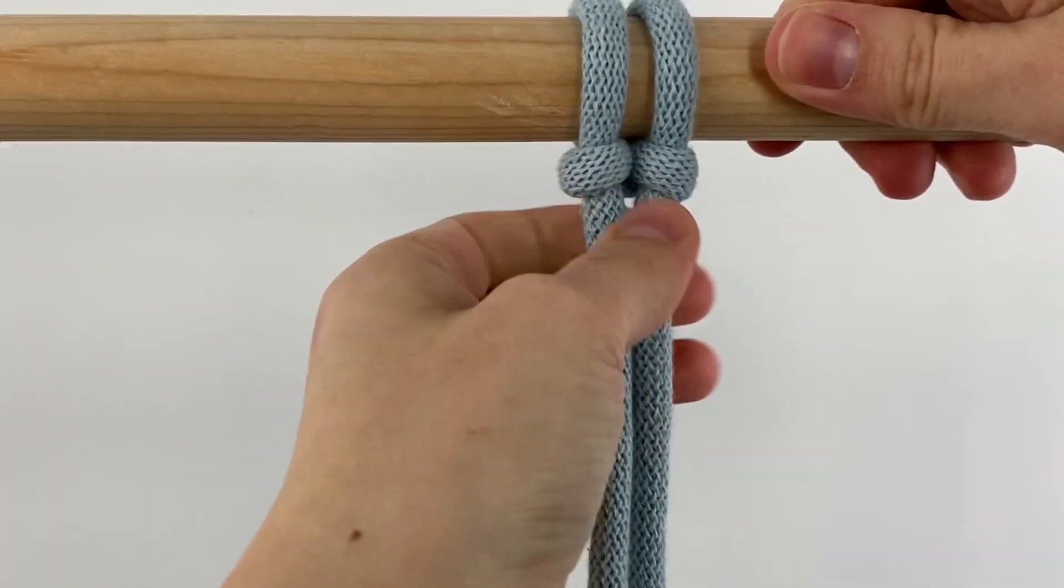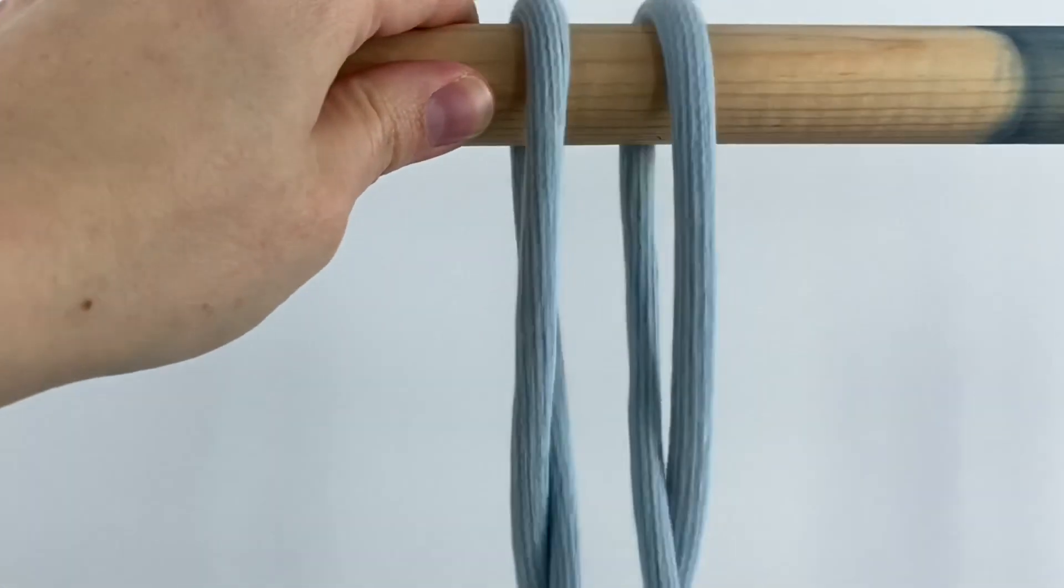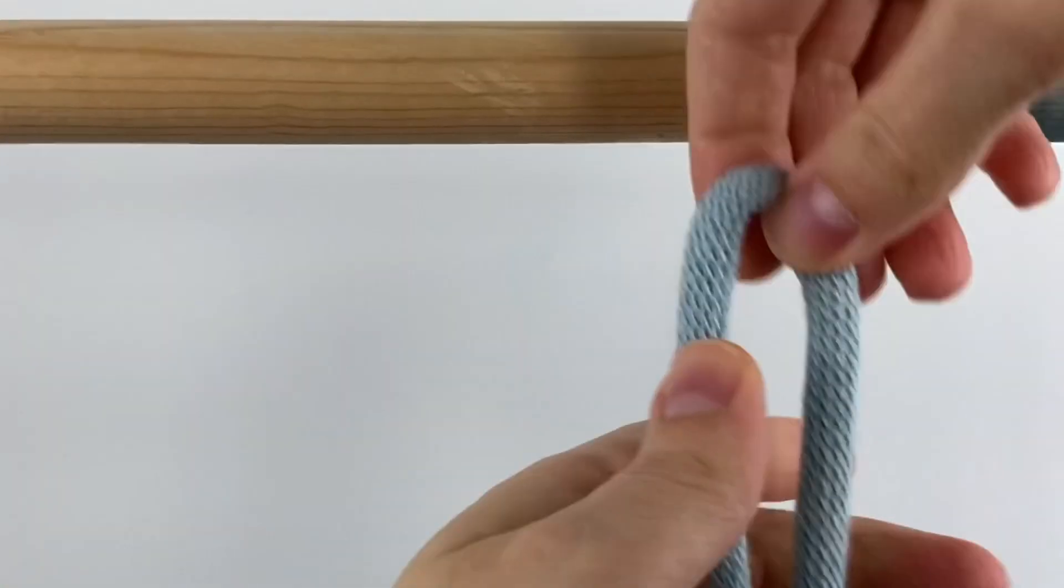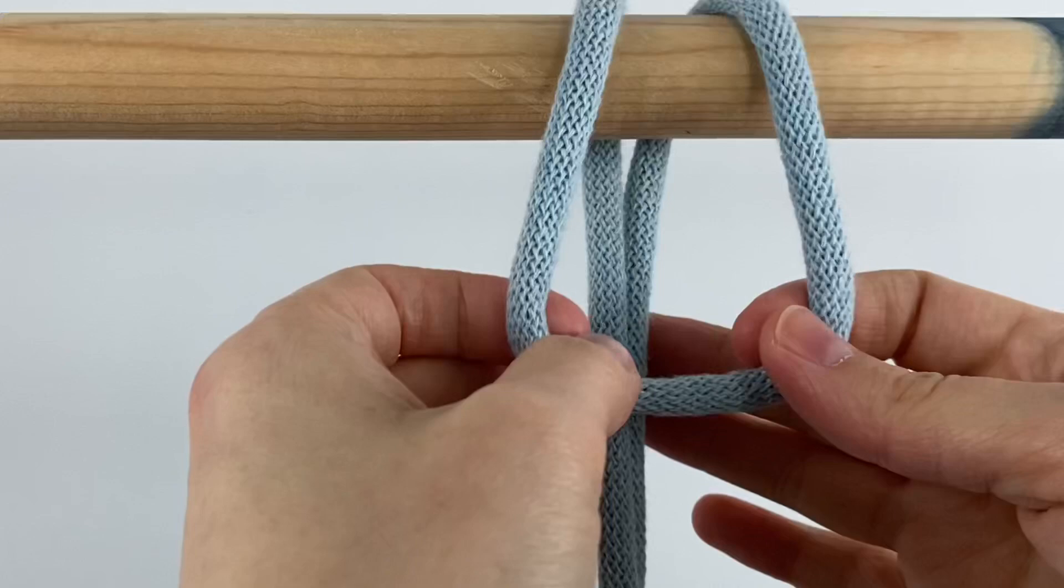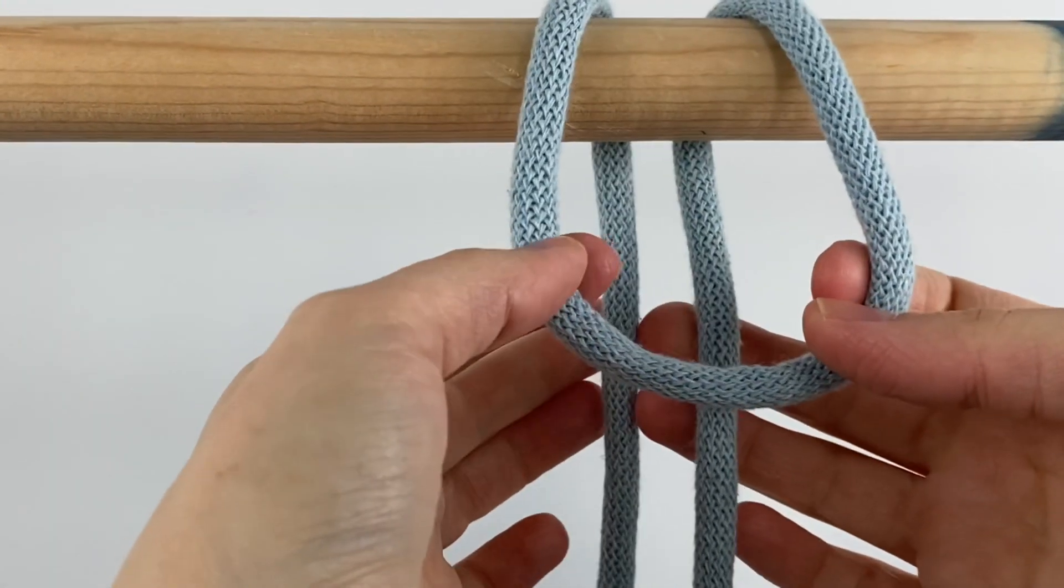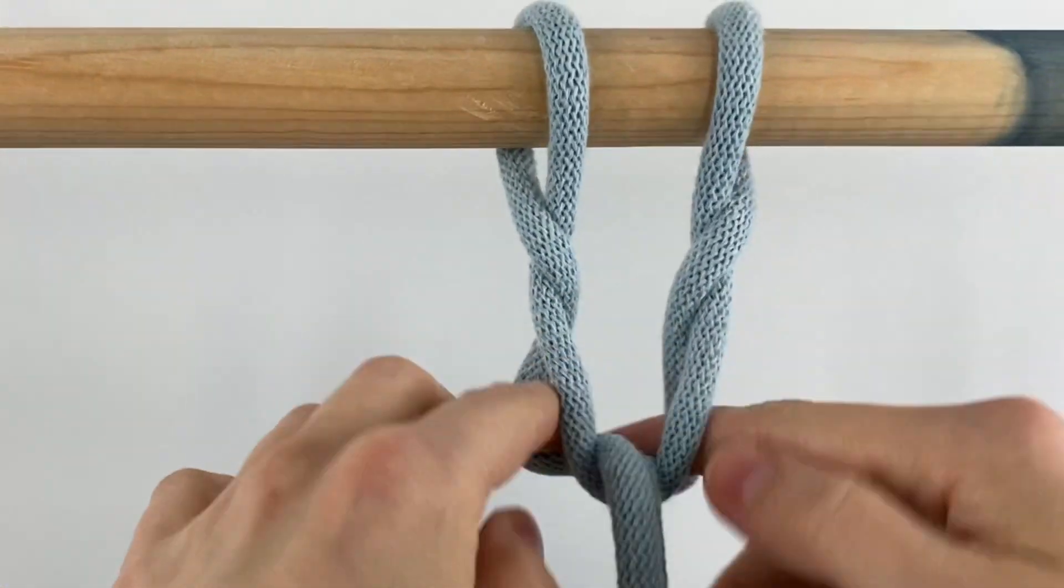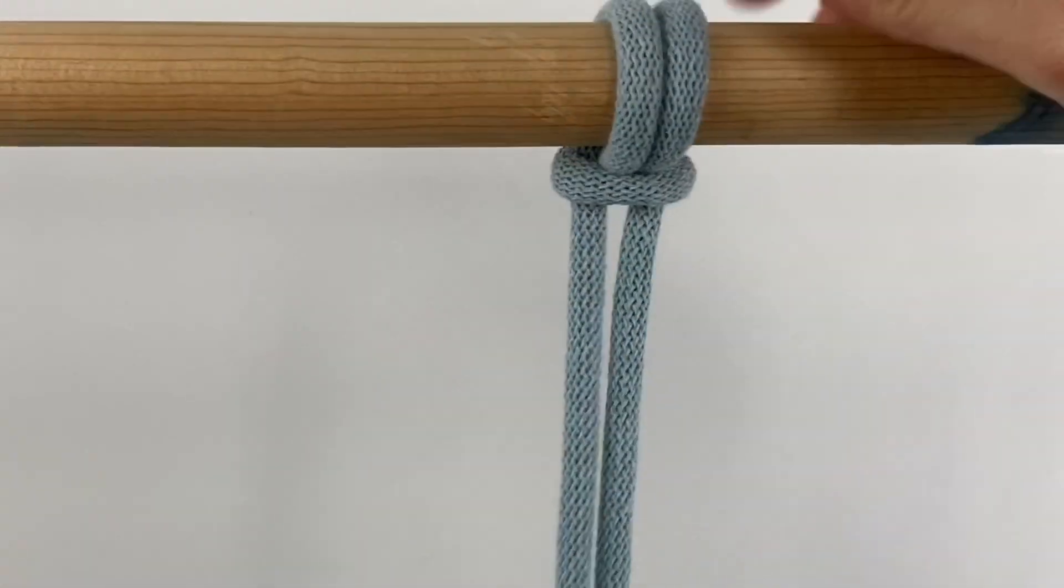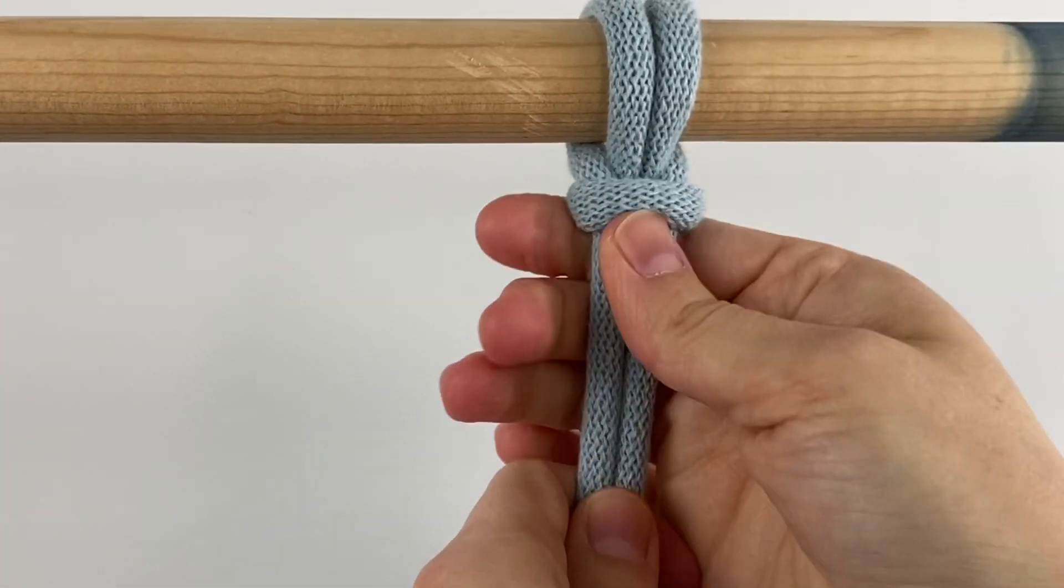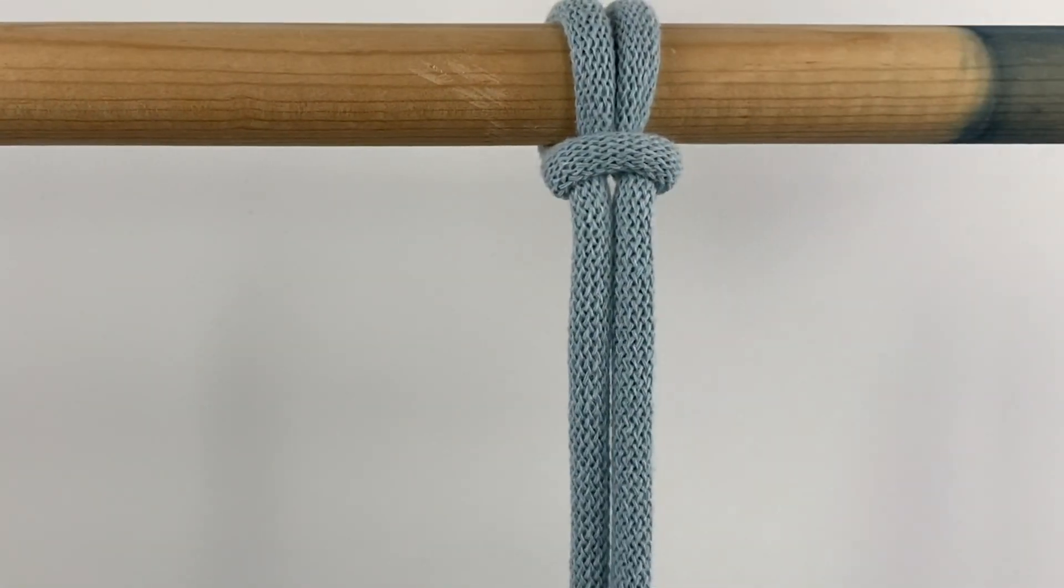And there you go, and this is also a really secure knot. Now I'll show you if you do it the other way, it looks almost like a larks head knot from the front. So you loop it over like you normally would, but instead of pulling it through like this, you wrap it around the side and around this other side and then pull them through. And then when you tighten it up on this side, it almost looks like a larks head knot, but it's much more secure. So that is the slingstone hitch.